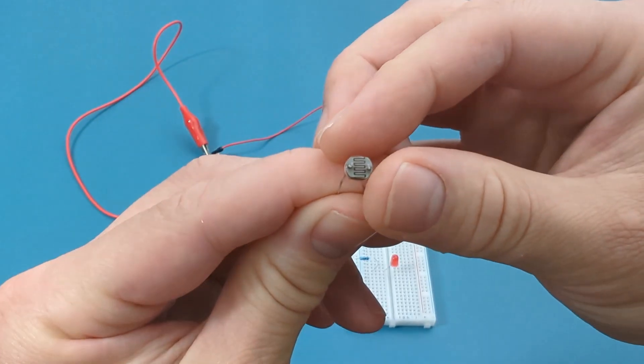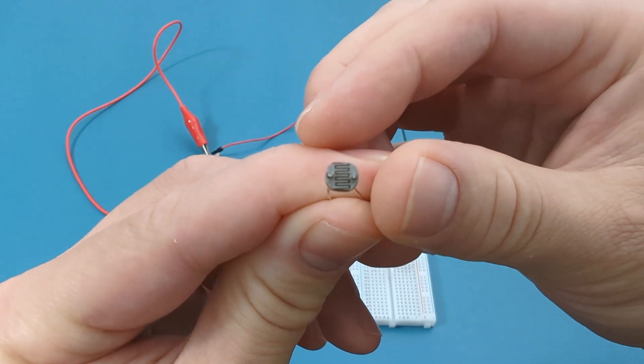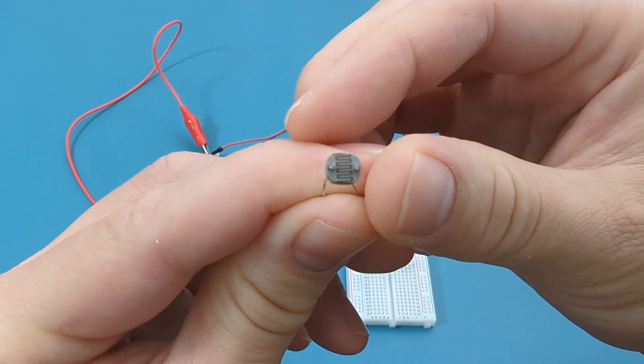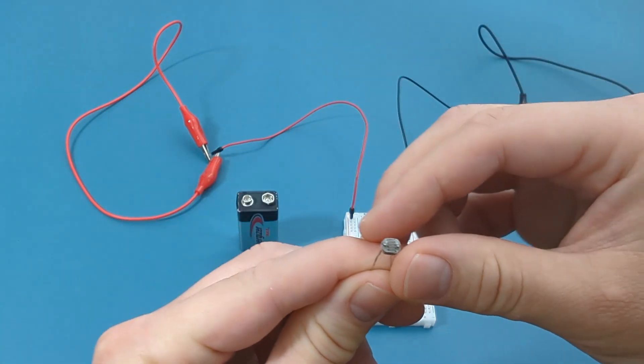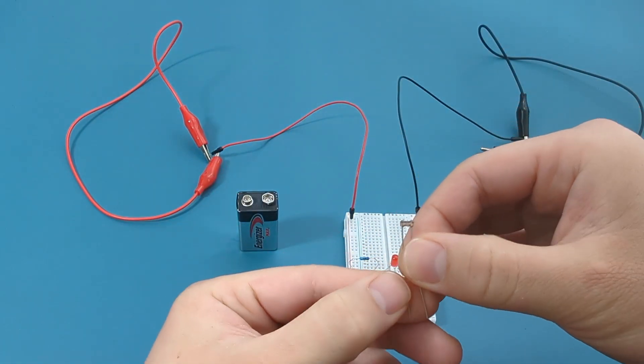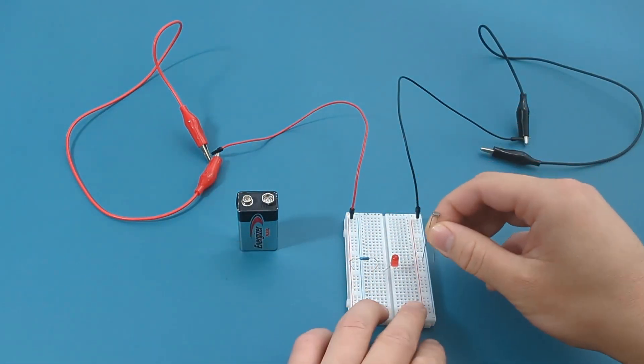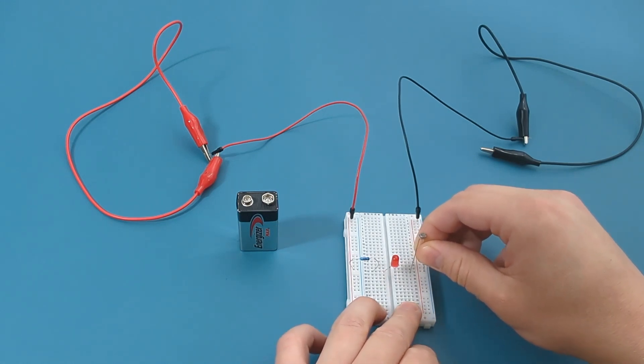This is the LDR or light dependent resistor. Insert the LDR into the same column as the red LED. Make sure the wire on the right side is in the same column as the negative terminal.